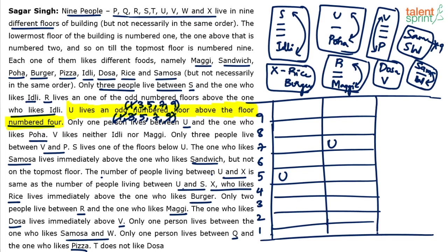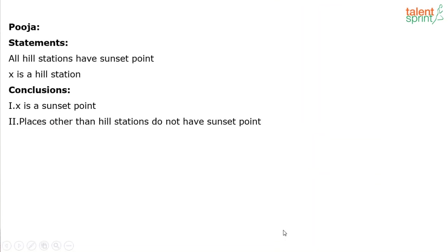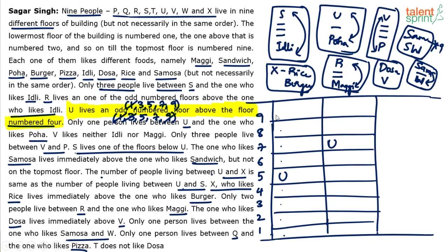U and X, U and S are equidistant — and since S lives below U, X must be above U. So for example: if U is on the 5th floor, S could be on the 3rd and X on the 7th, or S on 2nd and X on 8th, or S on 1st and X on 9th. We know X likes rice, and immediately below X is burger.